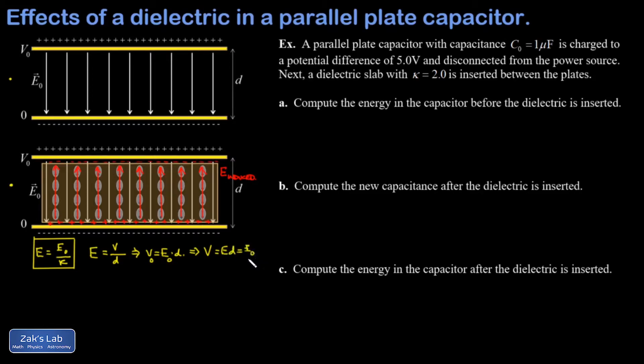And I recognize the E naught d in the numerator, and I see that my potential is the original potential over kappa. So the potential difference across the plates has also been reduced as a result of the reduced electric field between the plates.